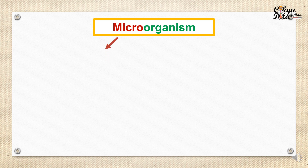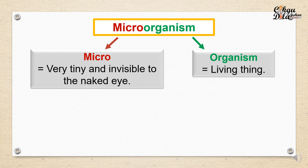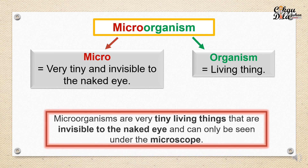Microorganism — it's actually two words. The first word is micro, which means very tiny and invisible to the naked eye. So it's very, very small — you cannot see it. Next, we have organism. Organism is a living thing, same like us. So, microorganisms are very tiny living things that are invisible to the naked eye and can only be seen under the microscope.